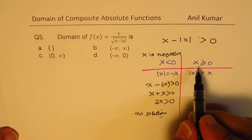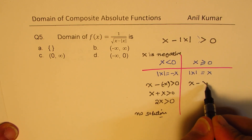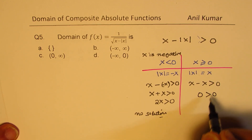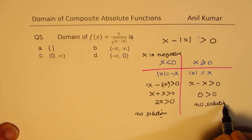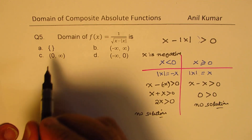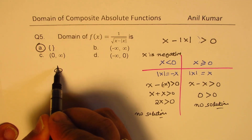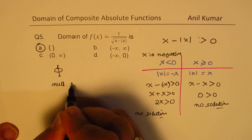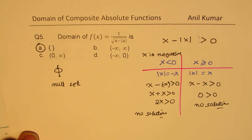So the solution is a null set, which is option A. We sometimes write this as phi (∅). This is an important example where the domain turns out to be a null set — there are no valid x values for this function.